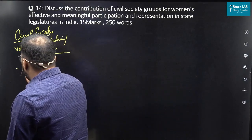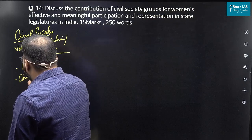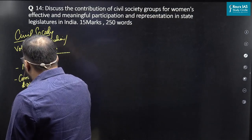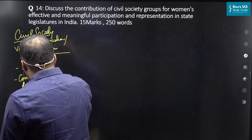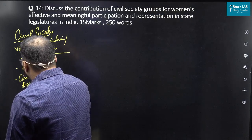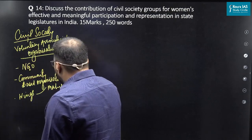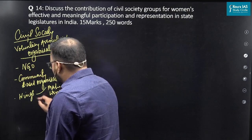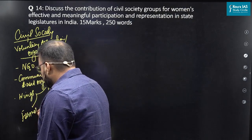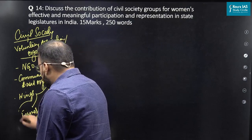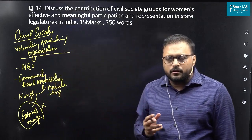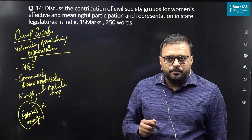The first category is NGOs. The second is community-based organizations. At the same time, I can also include the different wings of political parties — for example, the Mahila Wing, which is very specific with respect to this question. Different political parties also have wings like farmer wings, but obviously farmer wings cannot be written in this question. This helps your understanding of what you can write under the definition of a civil society group.